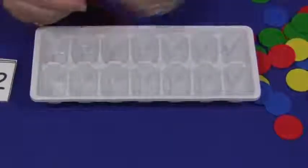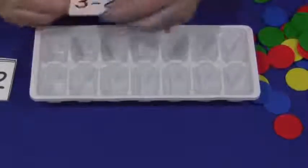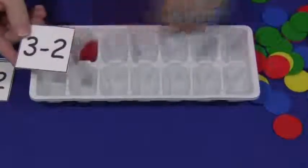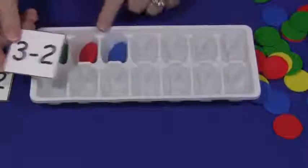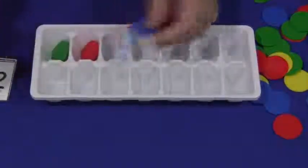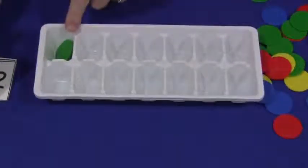For the subtraction, the child would just start off by putting the number of coins in that are in the first spot here. So they have their three coins in. Now they have to take away two. And they're left with one.